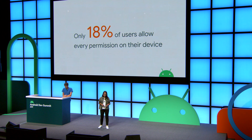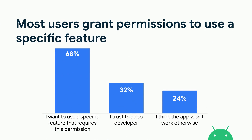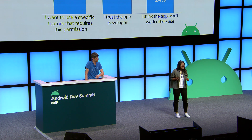We know that most apps tend to request access to permissions all at once, upfront, or during onboarding. But users have continuously told us that they prefer when an app asks for permission when they understand the reason for that permission. When we poll our users, we see that only 18% of them have every single permission granted on their devices. And when we ask them why they eventually grant a permission, the top reason is that they want to use or experience a specific feature of an app. This demonstrates that users are more likely to share their data when they understand the value of it.